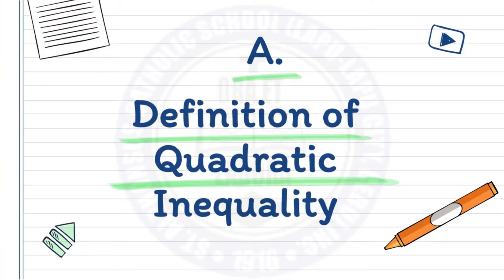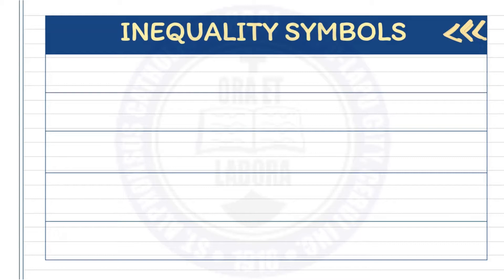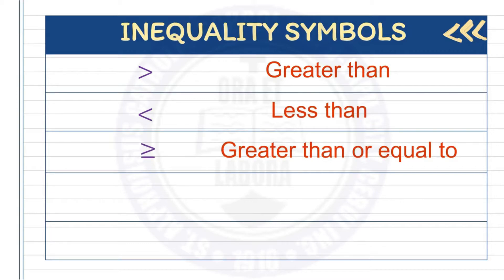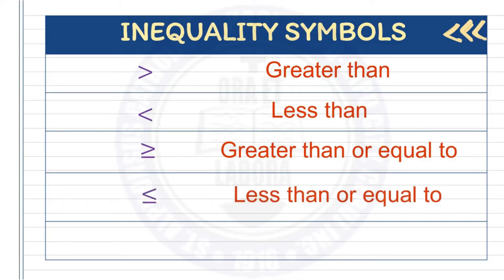We will recall the inequality symbols and the meaning of each symbol that we have learned before. These are the inequality symbols: greater than, less than, greater than or equal to, less than or equal to, and not equal to.